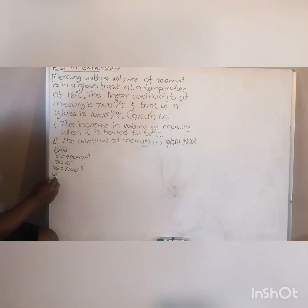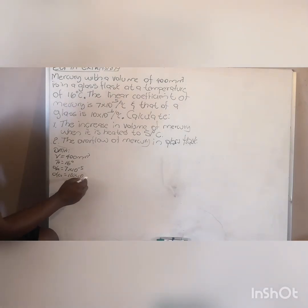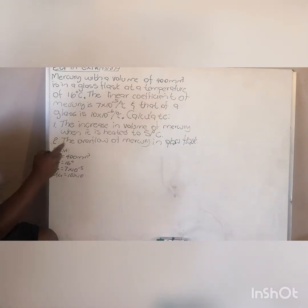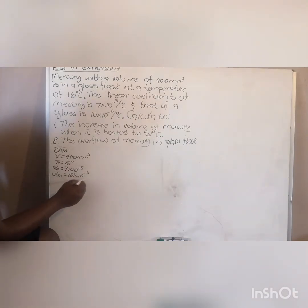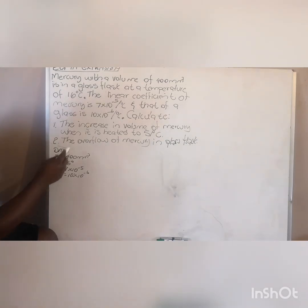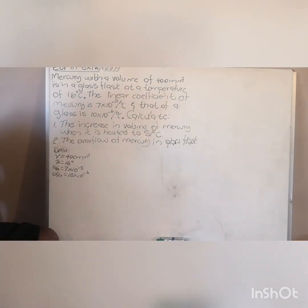We are given the coefficient of expansion of mercury and the coefficient of expansion of the cast (glass). The question asks us to calculate the increase in volume of the mercury when it is heated to 51 degrees Celsius, so the final temperature is 51°C.